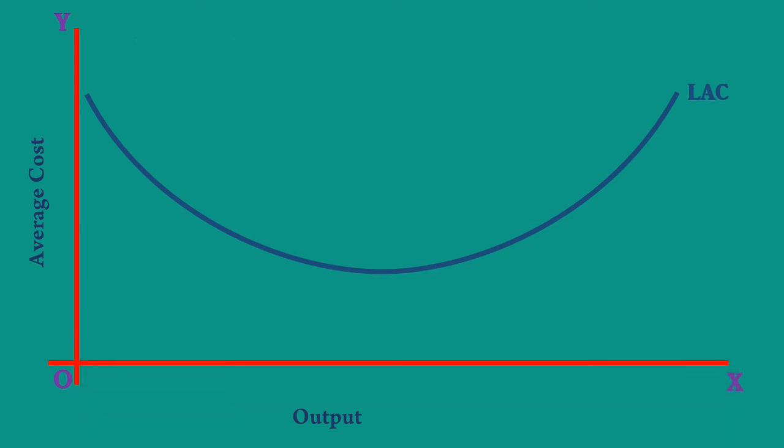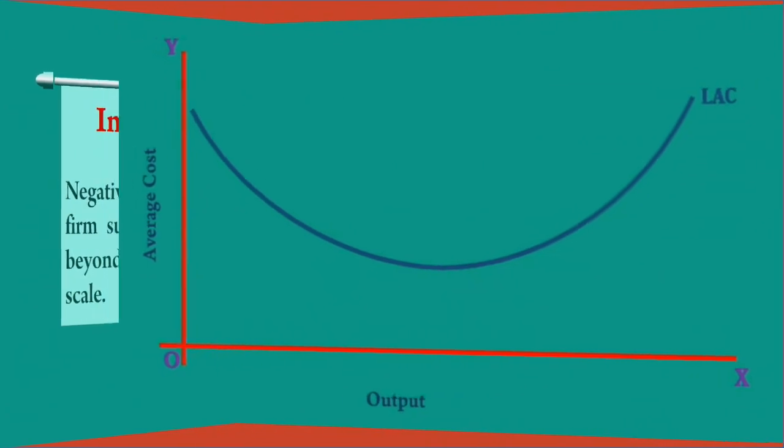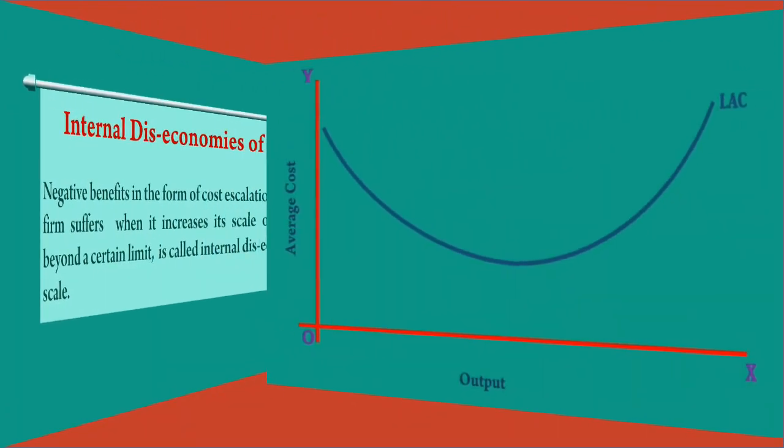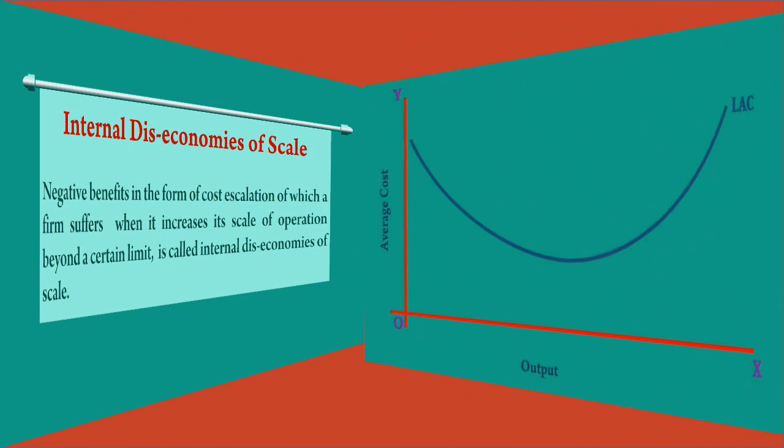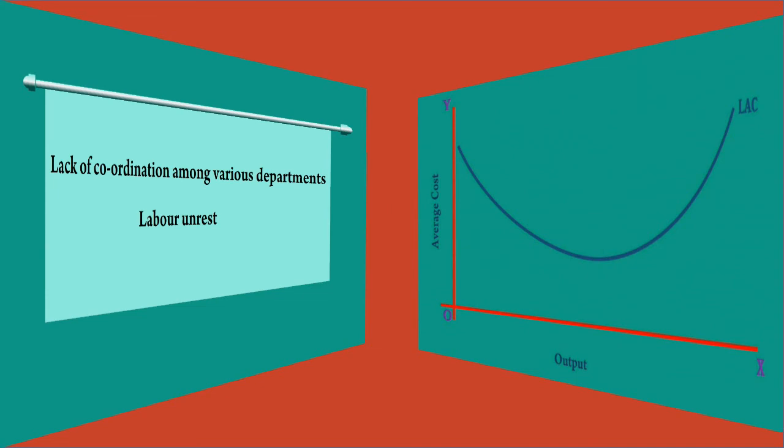This tendency sets in because of the internal diseconomies of scale. Negative benefits in the form of cost escalation of which a firm suffers when it increases its scale of operation beyond a certain limit is called diseconomies of scale. This arises due to lack of coordination among various administrative departments, labor unrest, etc.